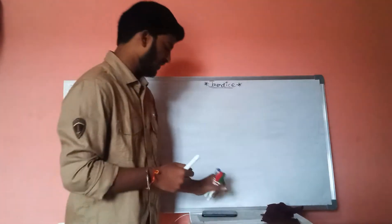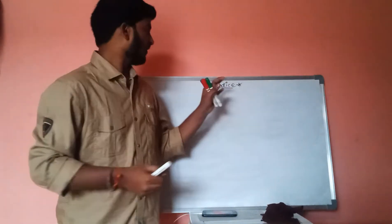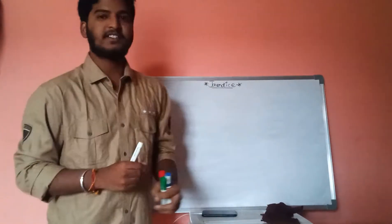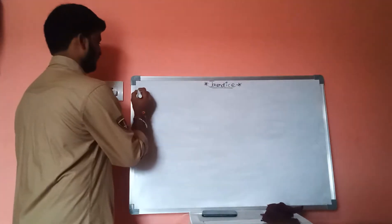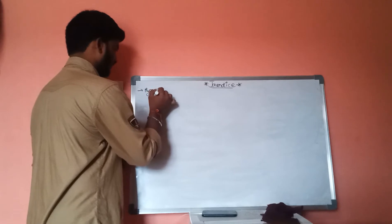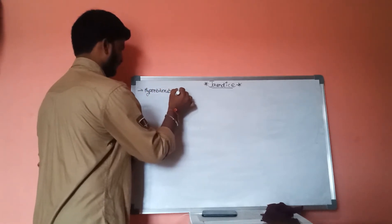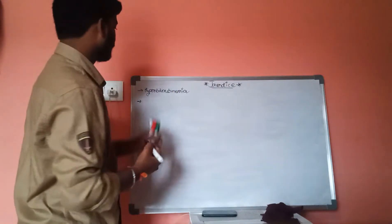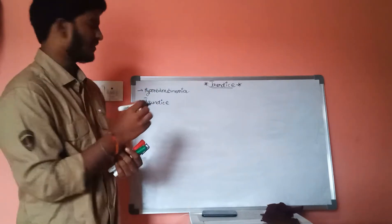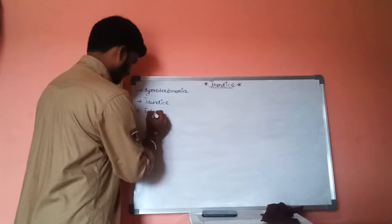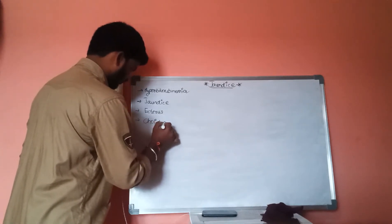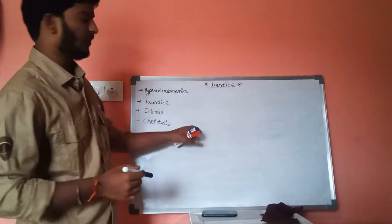Today let us discuss one of the important topics in biochemistry, that is jaundice. Before discussing about jaundice, let us discuss some terminology: first one is hyperbilirubinemia, next one is jaundice, next one is icterus, and next one is cholestasis. Let us discuss these four terminologies before discussing briefly about jaundice.